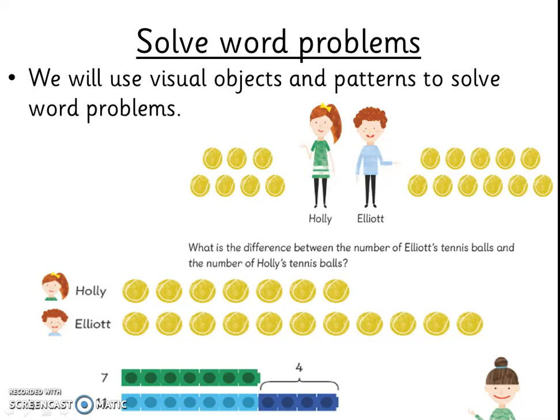We will continue to use visual objects and patterns in our work. This slide shows Holly with seven tennis balls and Elliot with eleven. To find the difference between the numbers of tennis balls, the balls have been lined up in two rows. From this, you can see up to the point where they have the same amount, and where the difference is in the number of balls Elliot has compared to Holly. The pattern of seven is demonstrated for both children with the tennis balls and also with the cubes.